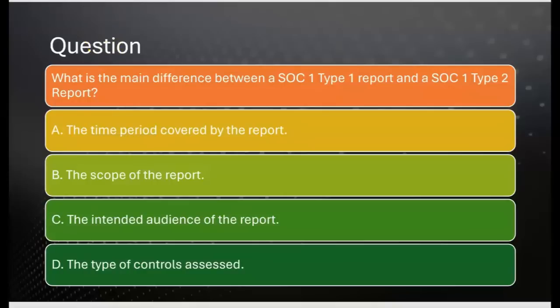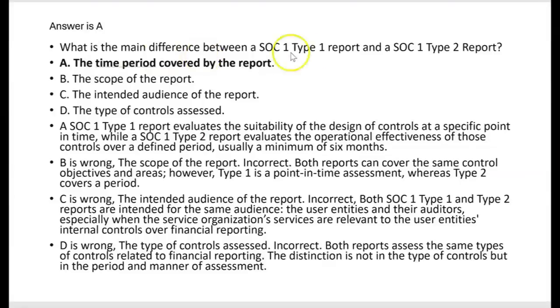The options are: A — the time period covered by the report; B — the scope of the report; C — the intended audience; D — the types of controls assessed. The answer is A. SOC 1 Type 1 evaluates the suitability of the design of controls at a specific point in time, while SOC 1 Type 2 evaluates the operational effectiveness of those controls over a defined period of time, usually a minimum of six months.